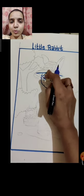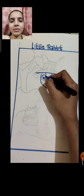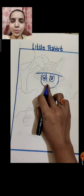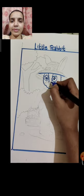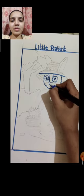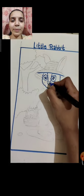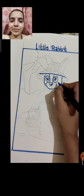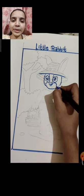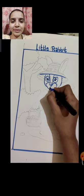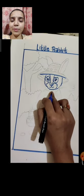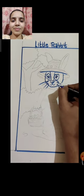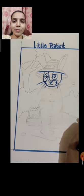Now we will make the nose. For that make two slanting lines - up it is broad and down it is thin and narrow. This is the nose shape, like a triangle or a little heart shape. Then this is the mouth part. Then make a smile using the curve shape. Then make the whisker lines of the rabbit.